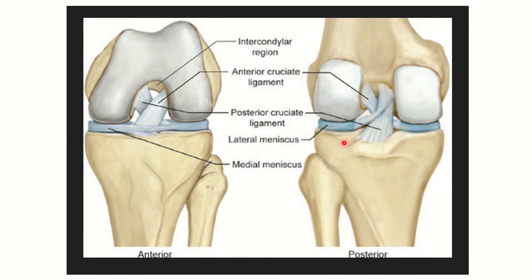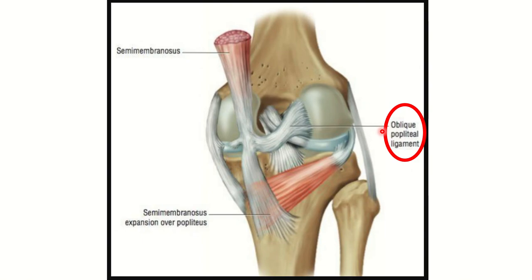We now have to find a structure which lies posterior to the posterior cruciate ligament but anterior to the popliteal artery. In this next picture, we can see the posterior cruciate ligament, and behind it there is another ligament — the oblique popliteal ligament. This ligament lies somewhat obliquely and is also attached to the popliteus.